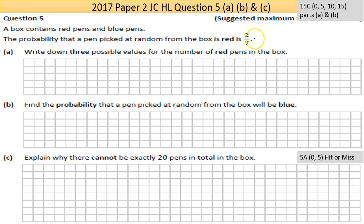A box contains red pens and blue pens. The probability that a pen picked at random from the box is red is 2/7. Now probability can never be greater than 1, so let's keep that in mind. It's always between zero which is not going to happen and 1 is 100% going to happen. Halfway you get a 50-50 chance.